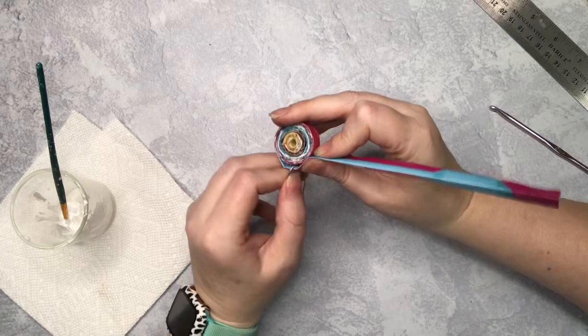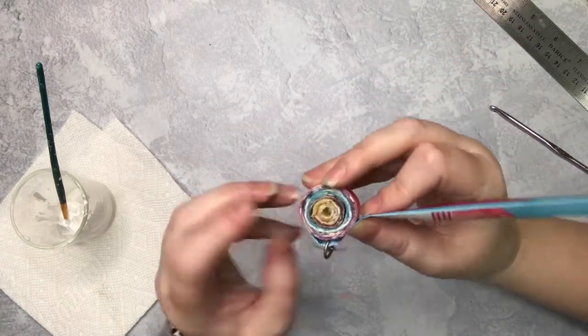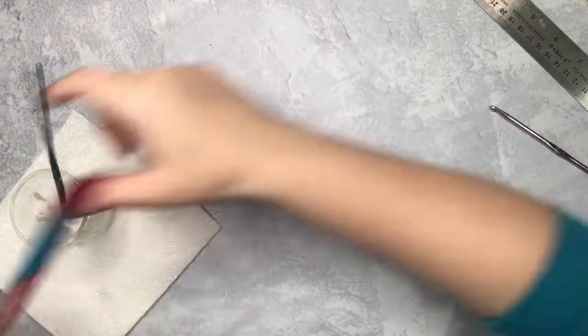I end up being able to wrap the strip through the jump ring twice, which isn't easy, but that coupled with the extra glue I'm dabbing in really secures things up. So far I've never had one of these unravel.